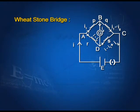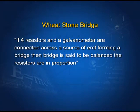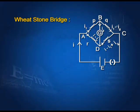Now we will study the Wheatstone bridge. If four resistors and a galvanometer are connected across a source of EMF forming a bridge, then the bridge is said to be balanced if the combined resistors are in proportion. Let's study the balanced condition of the bridge. Resistances P, Q, R, and S are connected as shown in the diagram. A galvanometer G is connected across BD, and a cell of EMF E is connected across AC, so the current distribution forms a bridge.